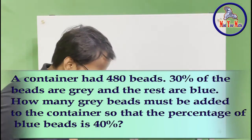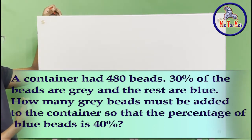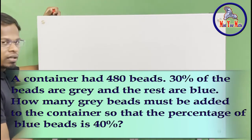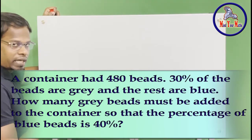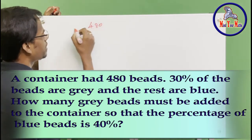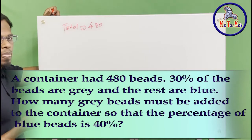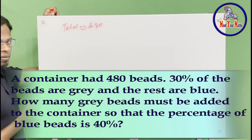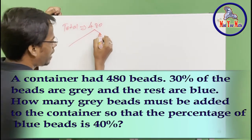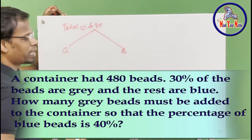So that is the problem. Now let's write down what is given in the problem. So in the container there are total 480 beads. Total is 480 beads. These are gray and blue beads.